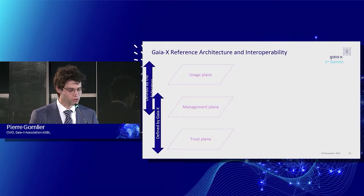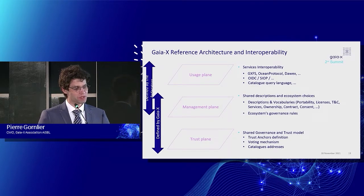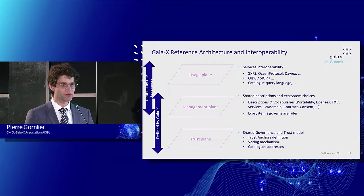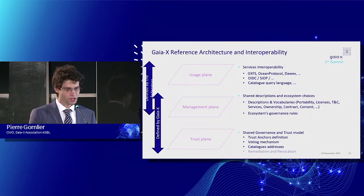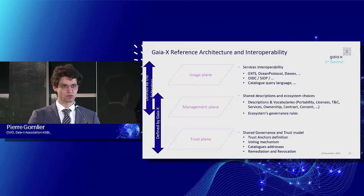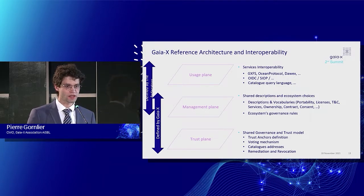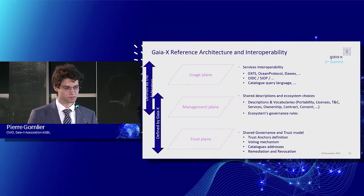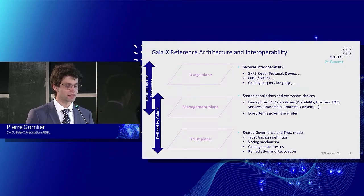The trust plane covers how we enforce functional and technical specifications. On the functional specification side, we have a definition of the trust anchor, the voting mechanism, and how we find catalogues — the idea being to make them bigger and richer. This is defined by the association, as part of the work on the architecture release paper from September. That's the governance part of GaiaX, defined by the association.